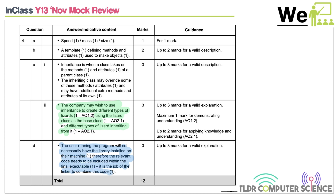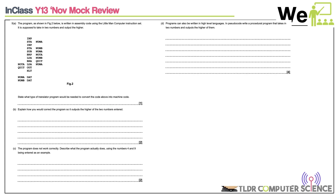The linker question is quite tough for three marks — there isn't much wiggle room. You essentially need to say: the object code references an external graphics library; the user may not have that library; the linker combines the object code and pre-compiled library code into a single executable. It's a valid-explanation-up-to-three-marks question, so you're somewhat relying on the examiner accepting your phrasing.